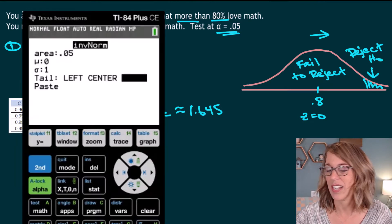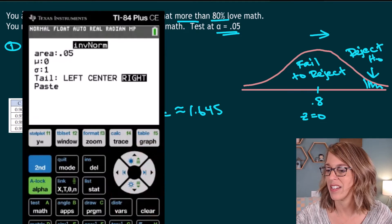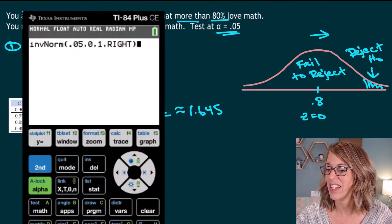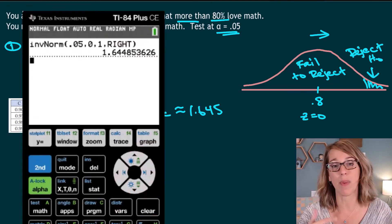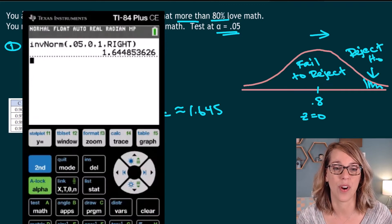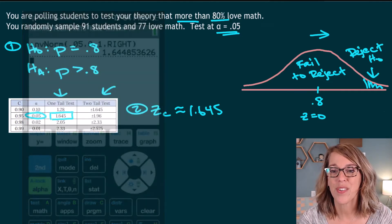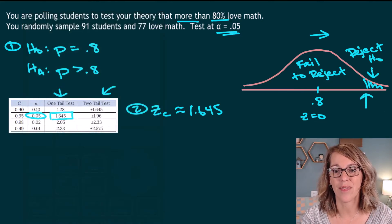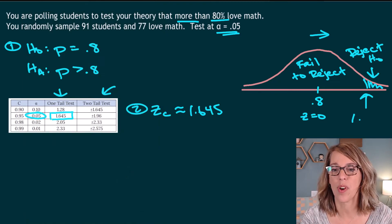I can also then change this to the right tail. And I've already got that selected, but I would hit enter to select it. And then I can go ahead and hit paste and enter. And there's my 1.645. That critical value is the Z score that cuts off my rejection tail. So 1.645 lives here.